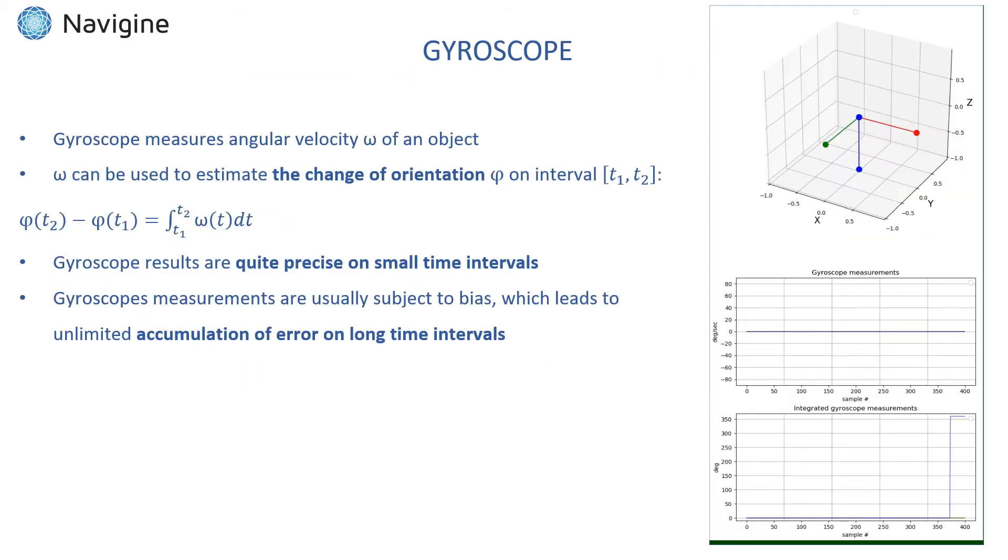Unlike magnetometer, gyroscope measures angular velocity of an object that can be further integrated over time to provide the change of orientation during specific time period. Thus, unlike magnetometer, gyroscope can only provide relative orientation.